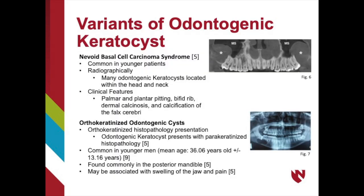There are a couple of variants of the odontogenic keratocyst. The first is nevoid basal cell carcinoma syndrome, which is common in children. Radiographically, many OKCs will be located in the head and neck. Clinically, patients will also have palmar and plantar pitting in the hands and feet, bifid rib, dermal calcinosis, and calcification of the falx cerebri in the brain.